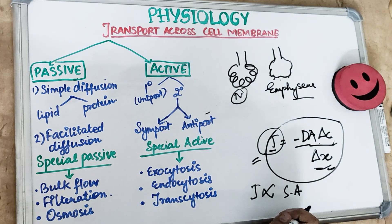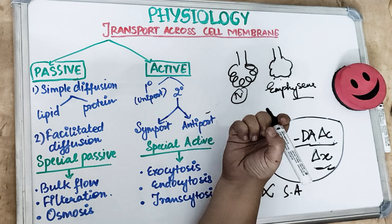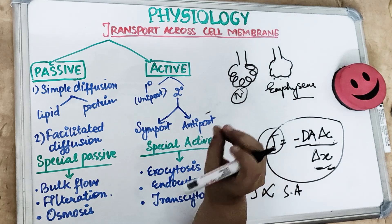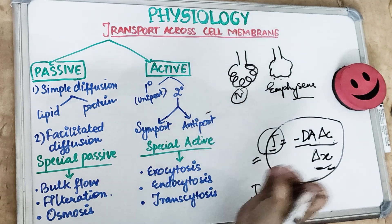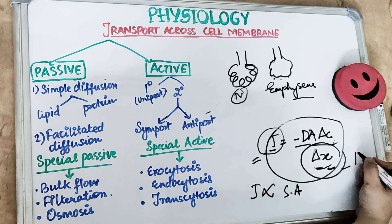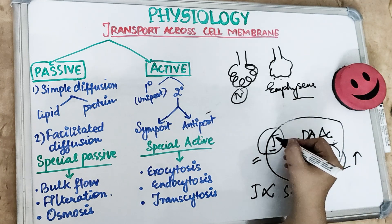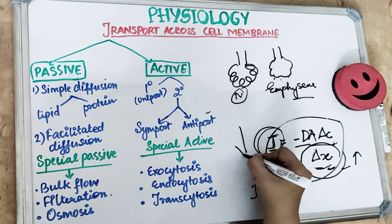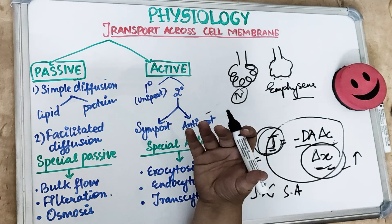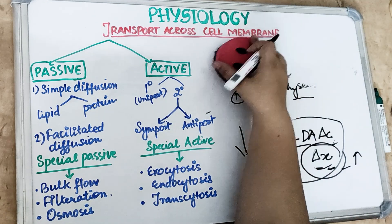In patients with pulmonary fibrosis or interstitial lung disease, the lung tissue gets thickened. In interstitial lung disease, injury and abnormal healing cause scarring and thickening. This increases delta X - the thickness of the membrane - which causes J, our diffusion, to decrease. So diffusion of gases in the lungs decreases in pulmonary fibrosis and interstitial lung disease.